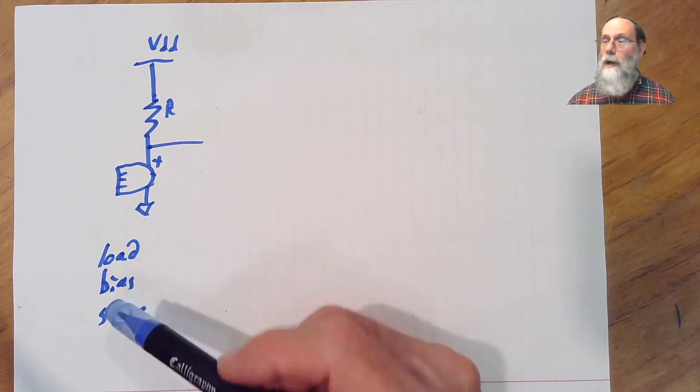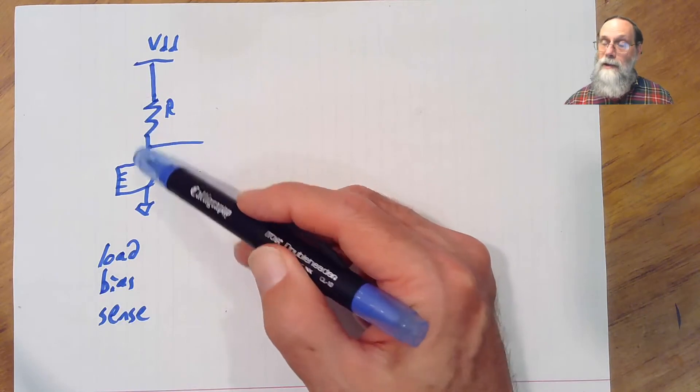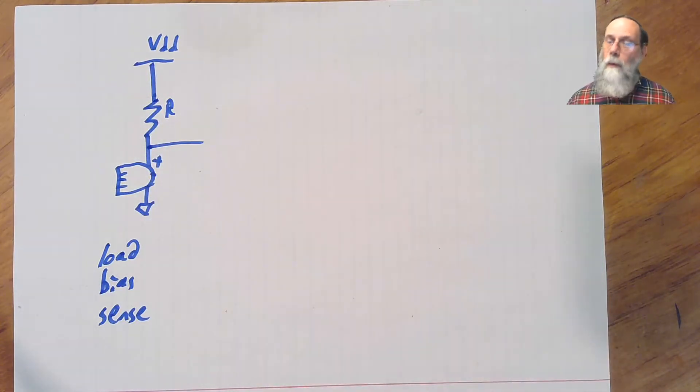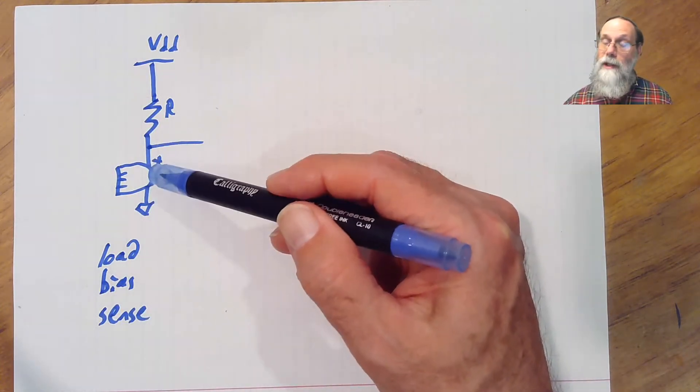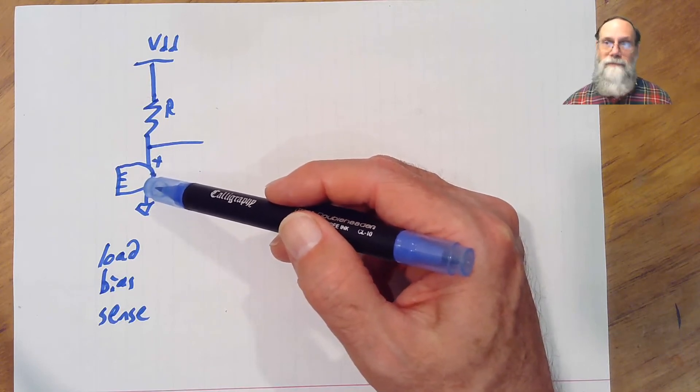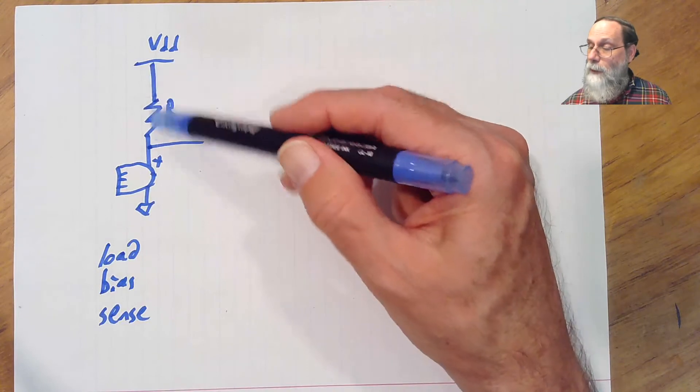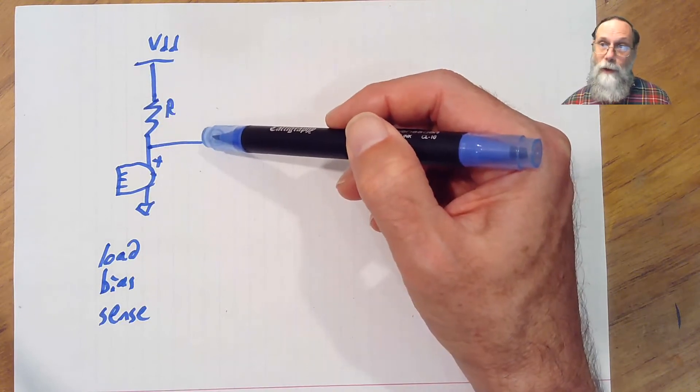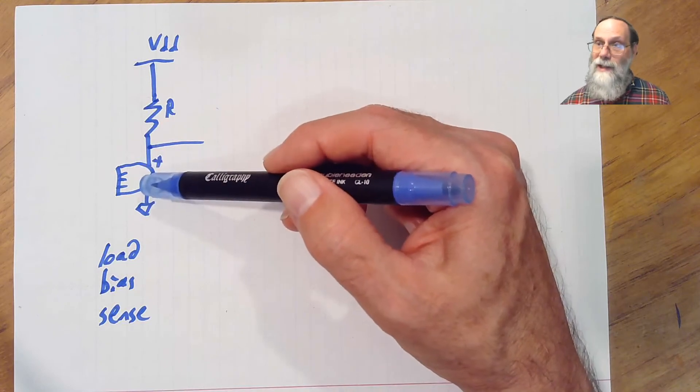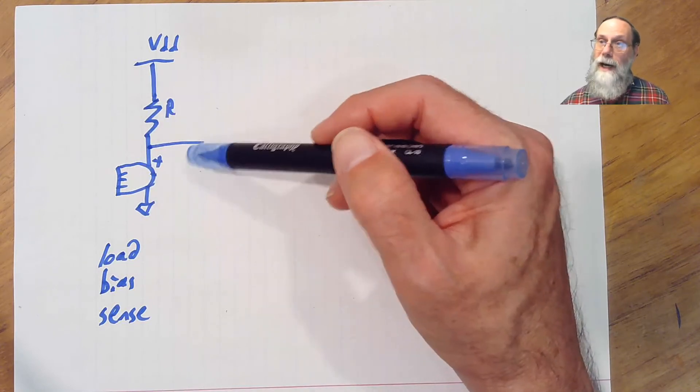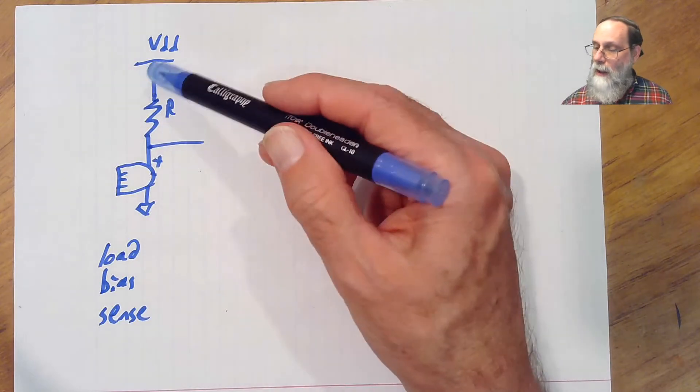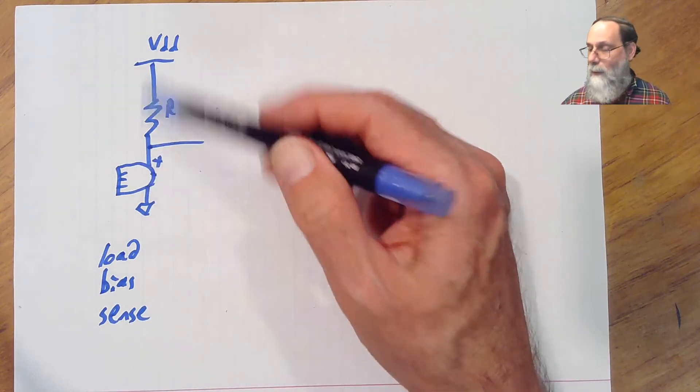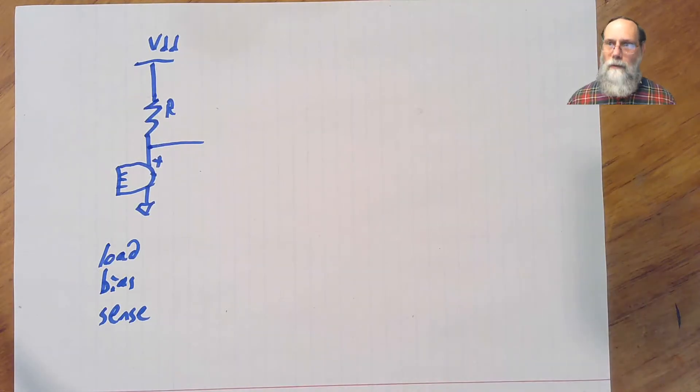When we use the term bias resistor, we're concentrating on this is what's providing the DC bias to the microphone so that the microphone can operate. When we're looking at it as a sense resistor, we're saying the tiny fluctuations in current through this microphone, which is the signal coming from the microphone, get converted by this resistor into fluctuations in voltage, where the delta I change in current becomes an R times delta I change in voltage. And the load resistor is just saying we've got a current source here, the microphone, and this resistor is where the current is coming from, the load on the microphone.